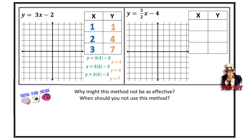Those are my three ordered pairs: (1, 1), (2, 4), and (3, 7). Now I use my skills for plotting ordered pairs to find (1, 1) and (2, 4). (3, 7) would be off my coordinate plane — this is the challenge with pre-made coordinate planes. You can extend the lines or estimate. If a point goes off the graph, find the opposite of your rise and run to find a point in the other direction: instead of up 3 and over 1, go down 3 and back 1. Regardless, we get a straight line.